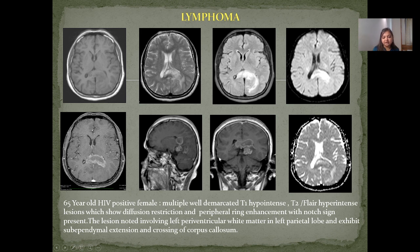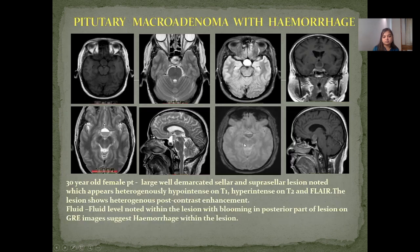Meningioma: Left periventricular white matter lesion in the left parietal lobe exhibiting subependymal extension and crossing the corpus callosum. Pituitary Macroadenoma with Hemorrhage: 30-year-old female patient with a large well-demarcated sellar and suprasellar lesion appearing heterogeneously hypointense on T1, hyperintense on T2/FLAIR, with heterogeneous post-contrast enhancement. A fluid-fluid level is noted within the lesion with blooming on the posterior part on GRE, suggesting hemorrhage within the lesion, which forms the typical figure-of-8 sign.